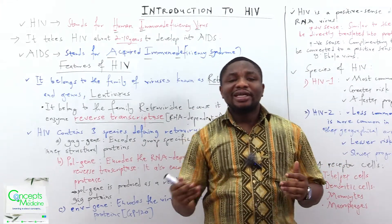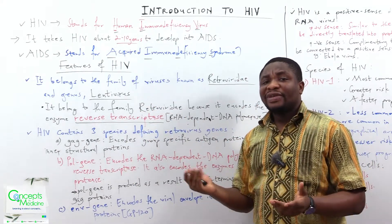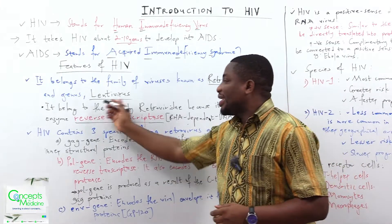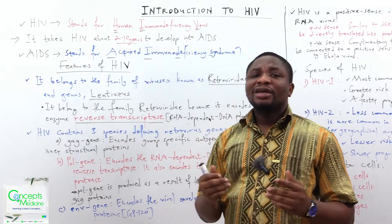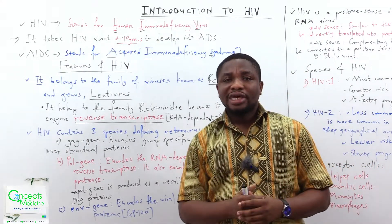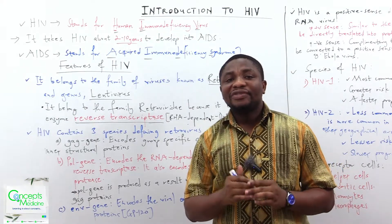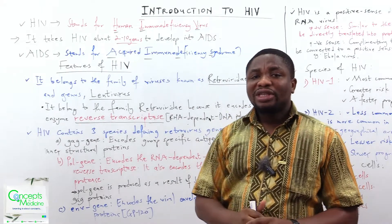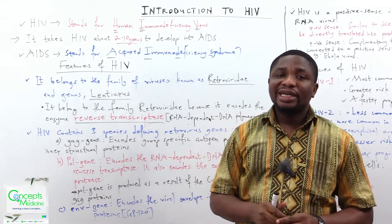Let's look at the features of HIV. The HIV, which is a virus, belongs to the family of viruses known as Retroviridae and the genus Lentivirus. It belongs to the family Retroviridae because it encodes an enzyme — an RNA-dependent DNA polymerase enzyme known as reverse transcriptase. This enzyme will play a very important role in the pathophysiology of HIV, which we'll cover in the next series.